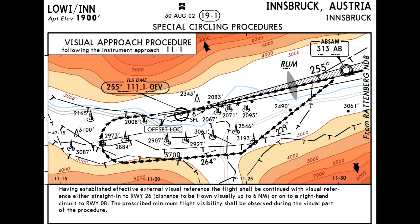You continue on 210 degrees until you get to the 255 radial on 111.1, which means you pick up Absam at approximately 5000 feet. So you leave Ratzenberg at 9500 feet, descending to 5000 feet, to be at 5000 feet or above by Absam 313. At this point you should be looking for the runway — you should be able to see it, because this is a completely visual approach.